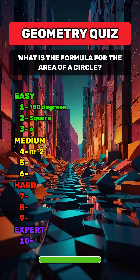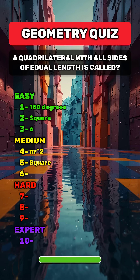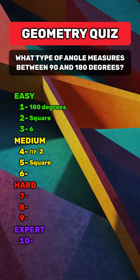Pi r squared. A quadrilateral with all sides of equal length is called? Square. What type of angle measures between 90 and 180 degrees?